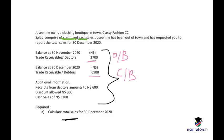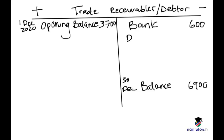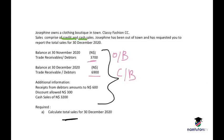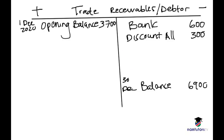Then we have discount allowed of 300. Discount allowed is treated the same as bank and is placed on the credit side — 300.